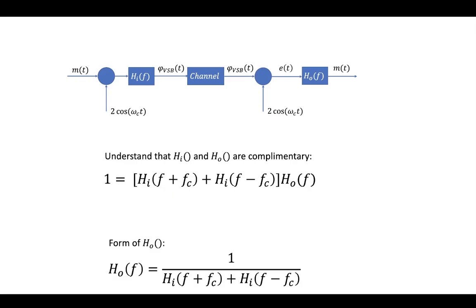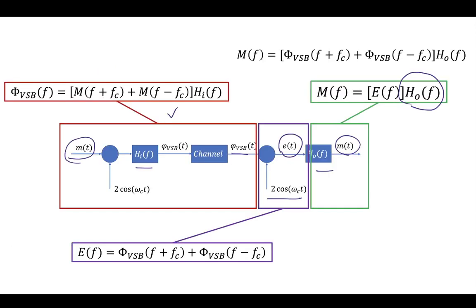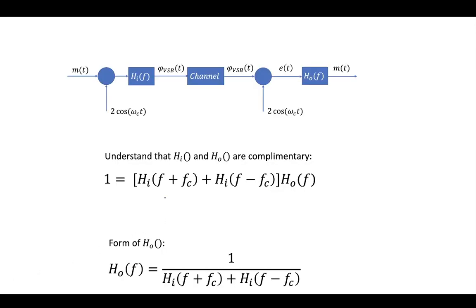so just like we shifted our VSB signal back at plus or minus FC, when we shift our HI signal at plus or minus FC, this is going to give us some low-frequency components or some baseband components.